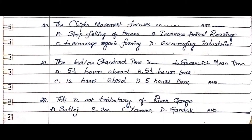Question 21: The Indian Standard Time is how many hours relative to Greenwich Mean Time? Option A. Five and a half hours ahead, Option B. Five and a half hours back, Option C. Twelve hours ahead, Option D. Five hours back. The answer is Option A. Five and a half hours ahead.